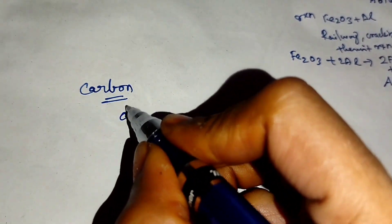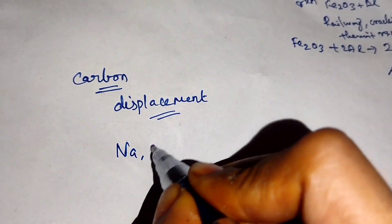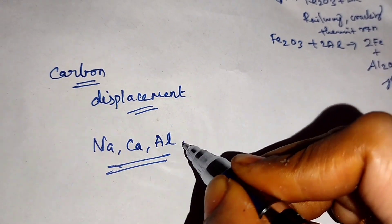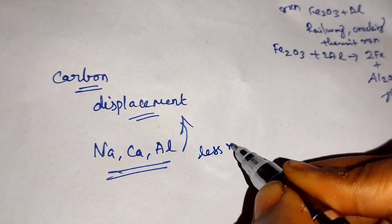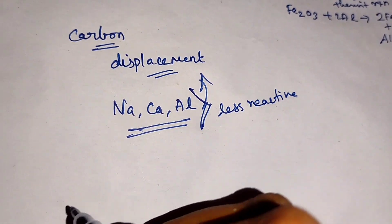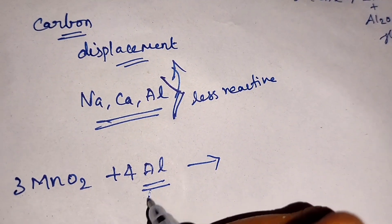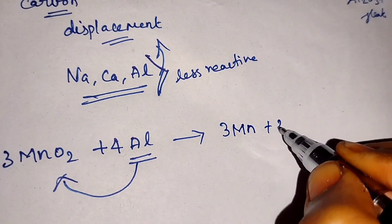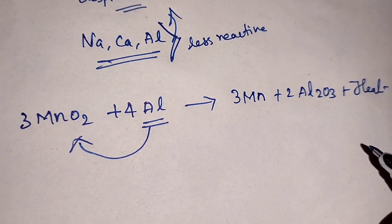Sometimes when using carbon, a displacement reaction also takes place. Strong reactive metals such as sodium, calcium, and aluminium can displace less reactive metals. The less reactive metal is displaced by the strong reactive metals. For example, manganese oxide reacting with aluminium - the strong reactive aluminium displaces manganese. Manganese is separated, aluminium oxide is formed, and a high amount of heat is evolved. It is an exothermic reaction.